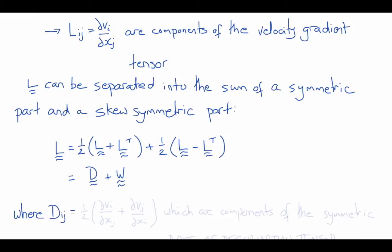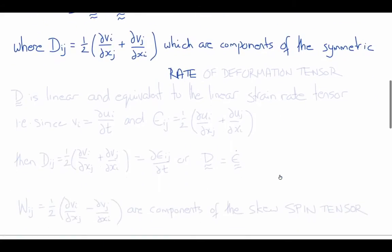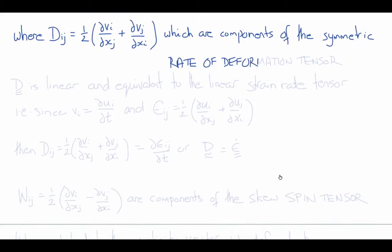Therefore, the components of D will be one-half del vi del xj plus del vj del xi, which looks very similar to the Cauchy strain tensor with v instead of u. And in fact, the components of the rate of deformation tensor are often also referred to as the components of the strain rate tensor.